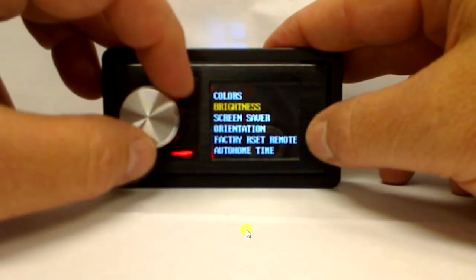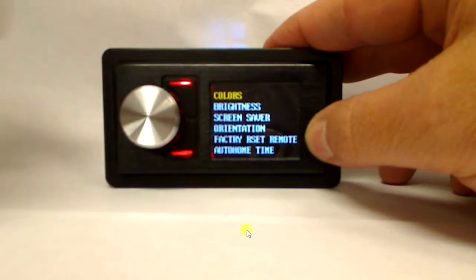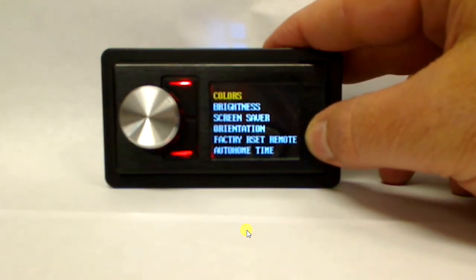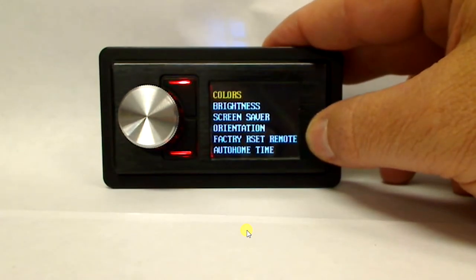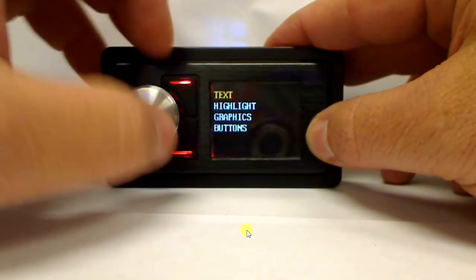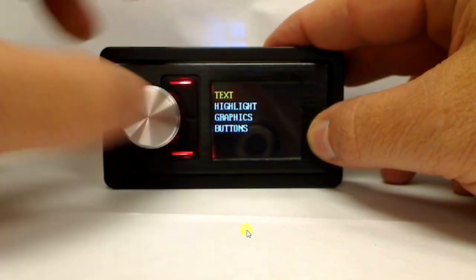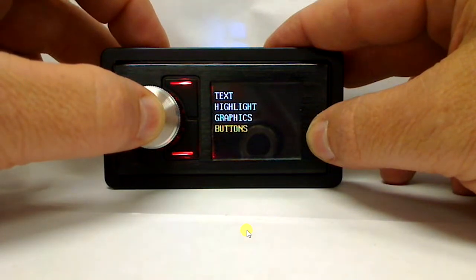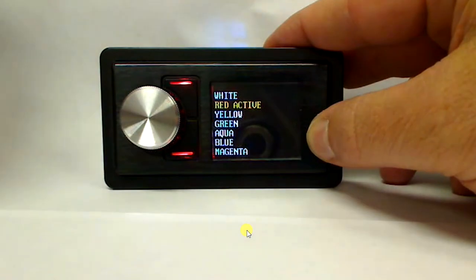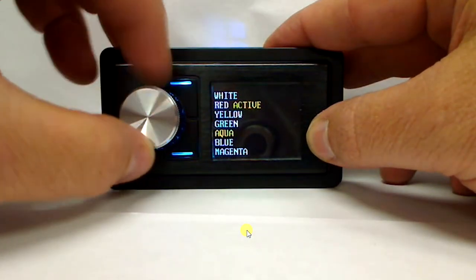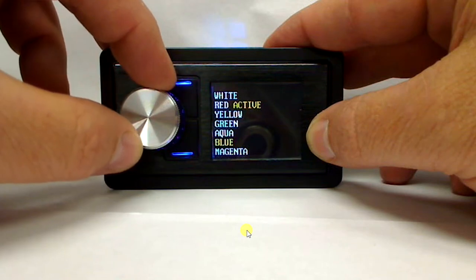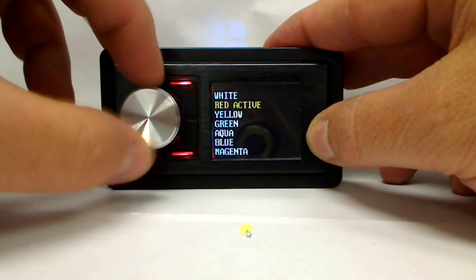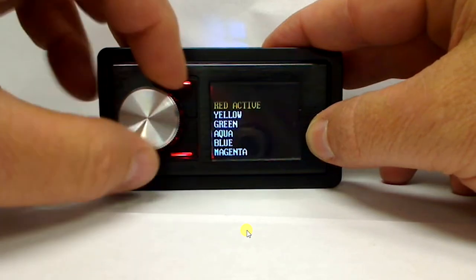Now we're going to go ahead and we're going to go up to colors. Now one of the things I like about this is if you're getting ready to integrate this into a car, nothing I can't stand more than having some electronics where the factory colors of the illumination and stuff don't match the vehicle. So what we've done is if you go into colors you can change the text, the highlight, the graphics, and the buttons. We'll just go down to the buttons here and show you how this works. So say if you have a GM and you have kind of like a teal button with a red accent and you want those red accents shown, well you can change the color of the buttons from magenta, blue, aqua, green, yellow, red, and white. So we're going to set red and we're going to go ahead and back out of it.